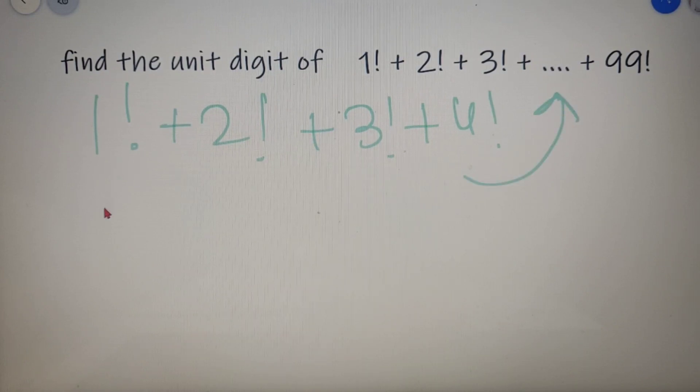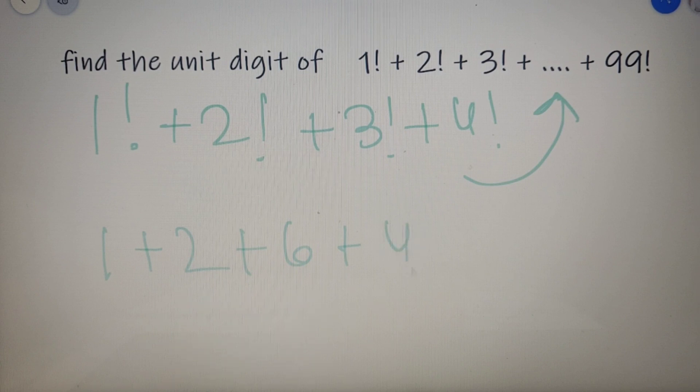So we have calculated the unit digit of 1 factorial as 1, for 2 factorial as 2, for 3 factorial as 6, and for 4 factorial as 4. So it sums up to be 13 and the unit digit of 13 is 3.